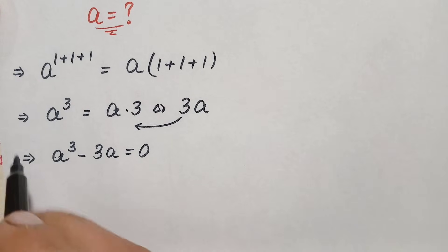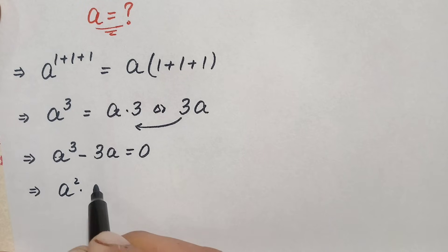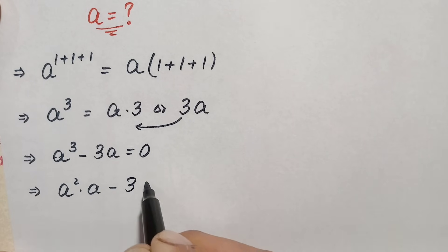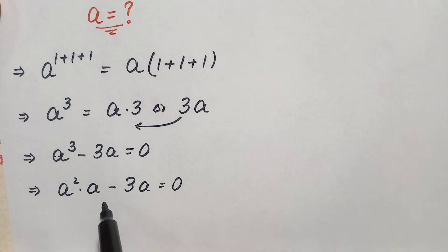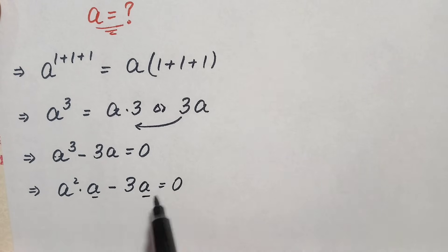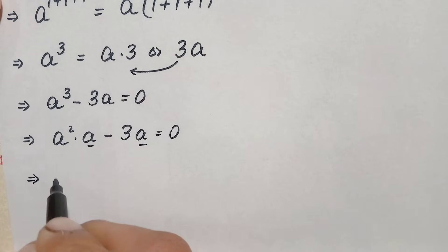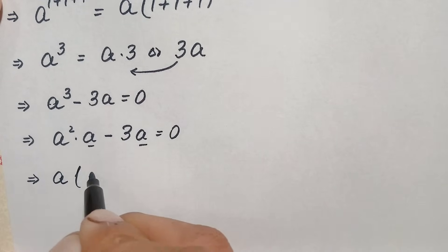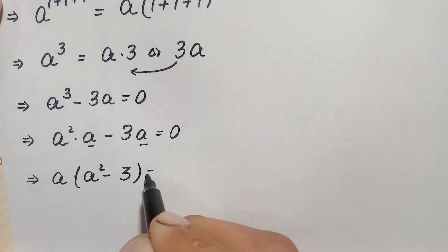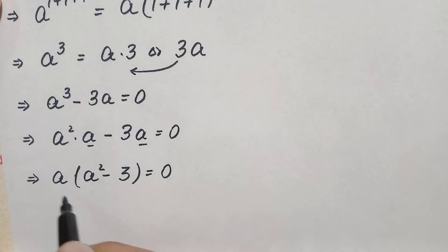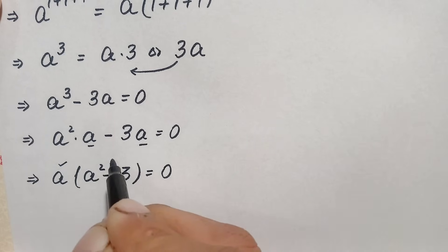We rewrite a cubed as a squared times a, so the equation is: a squared times a minus 3a equals zero. From the left-hand side we take 'a' as a common factor from both terms, giving us: a times (a squared minus 3) equals zero. Since the product of these two expressions is zero, either one of them must be zero.